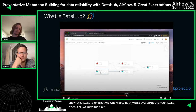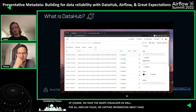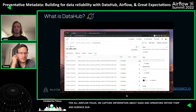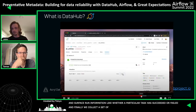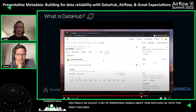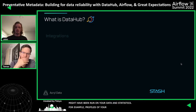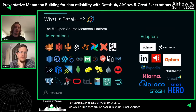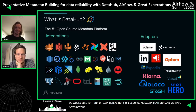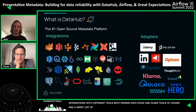For Airflow users, we capture information about your DAGs and the operators within them, and we even surface run information like whether a particular task has succeeded or failed. Finally, we collect operational signals about your data, such as tests that may have been run and statistics like profiles of your data sets. We like to think of DataHub as the number one open source metadata platform, with about 40 integrations with different tools — both modern data stack and some older tools — and a great list of adopters like Udemy, Peloton, Zynga, and Expedia.